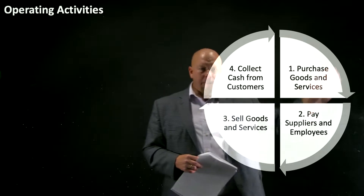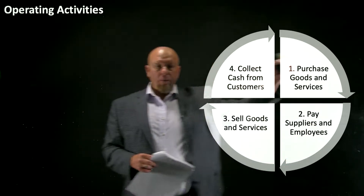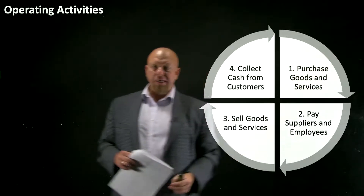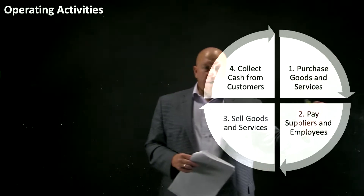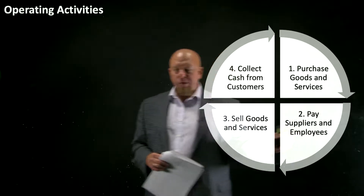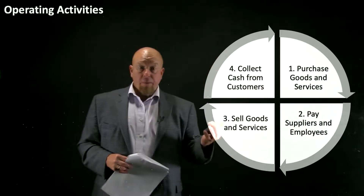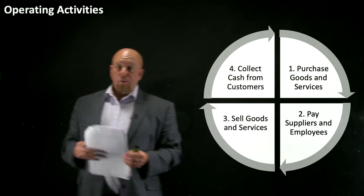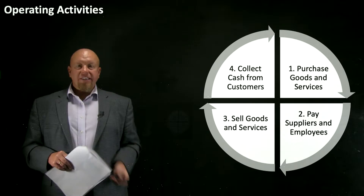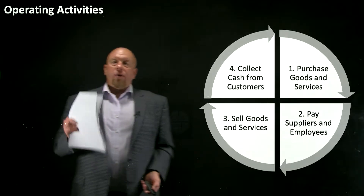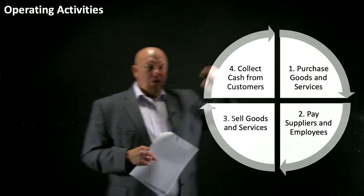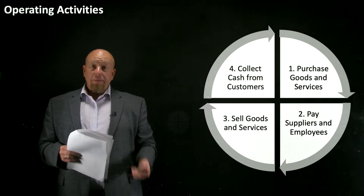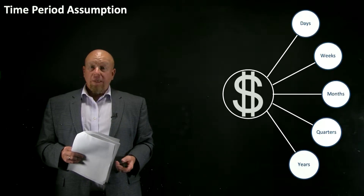You may recall the operating cycle starts when we purchase goods and services — materials, raw materials, ingredients, that type of thing. We pay our suppliers, we pay our employees, we pay our other operating expenses. Then we sell whatever it is we're in business to sell, and ultimately our customers will pay us cash. That's the operating cycle. What we're trying to measure with the income statement is the results — the scorecard from what happened during a period of time from the operations we conducted.